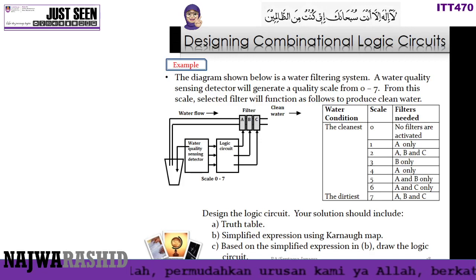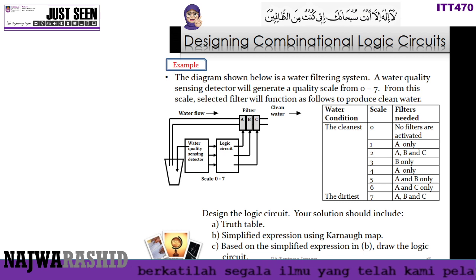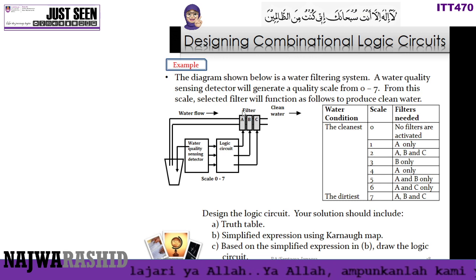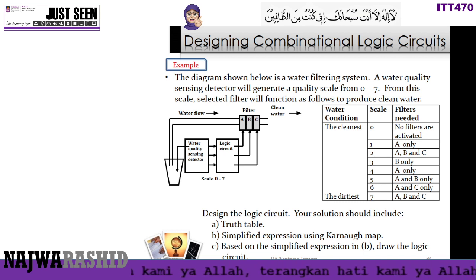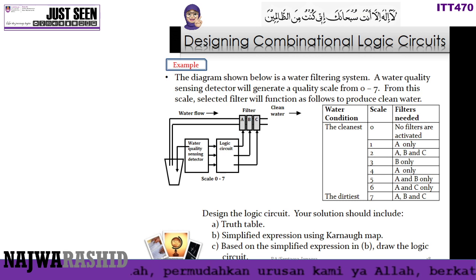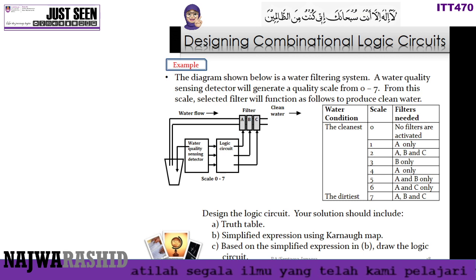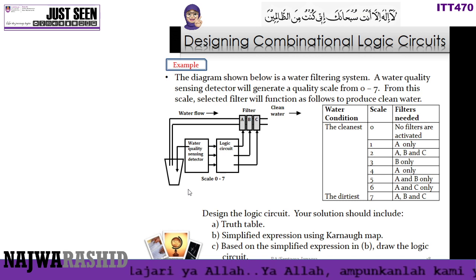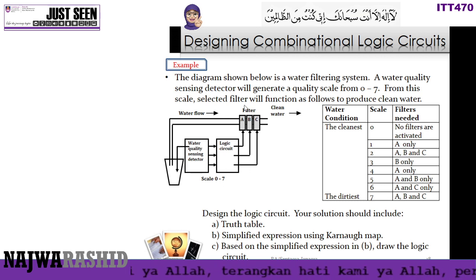This video is an example showing how to design a combinational logic circuit using a case study. The diagram shown is a water filtering system. It has a sensing detector that generates a quality scale from 0 to 7. Based on the scale selected, a filter will be activated to produce clean water. The system has a sensor, a logic circuit, and filters.